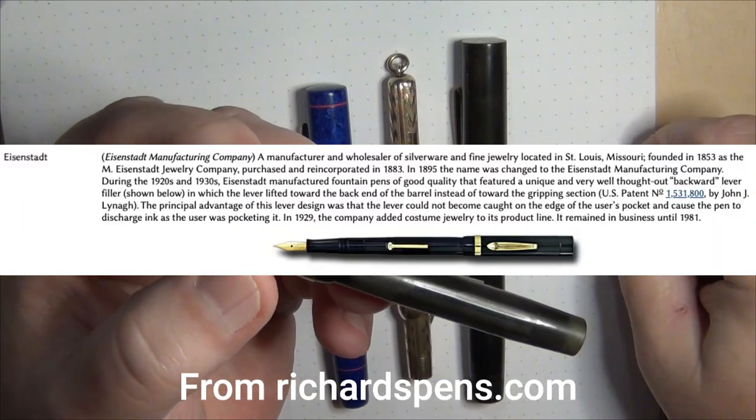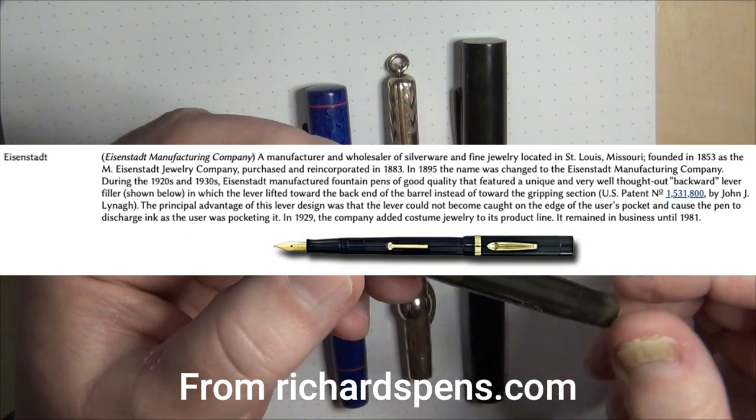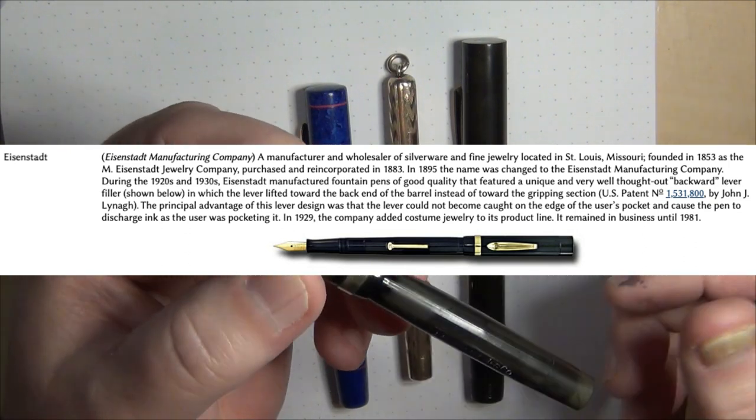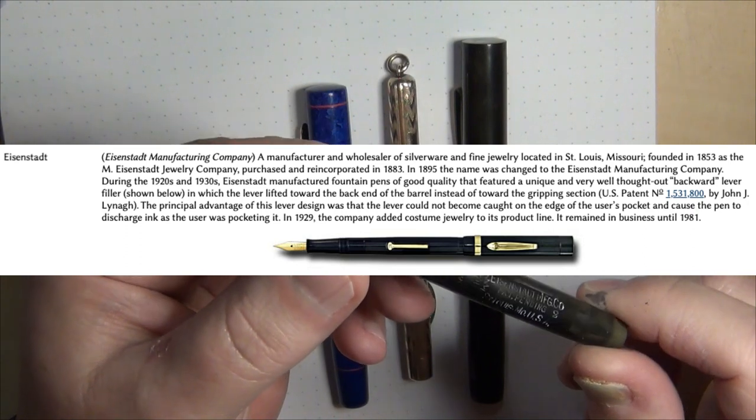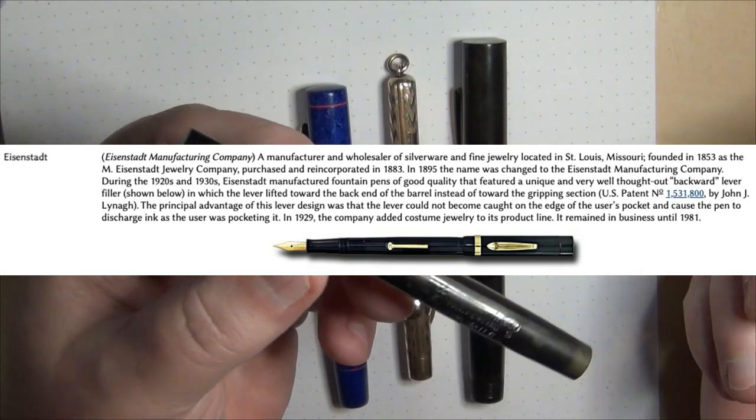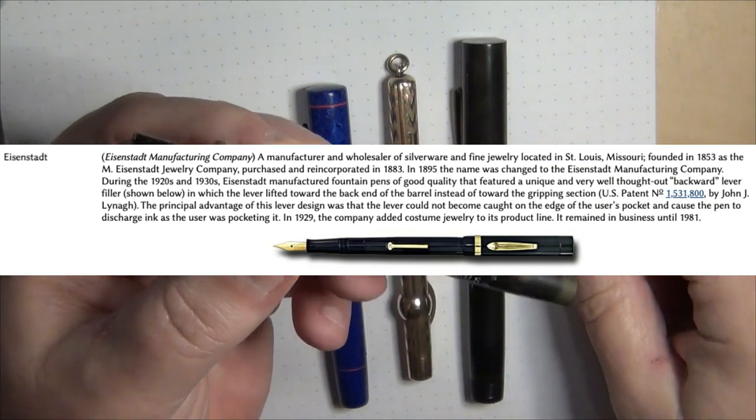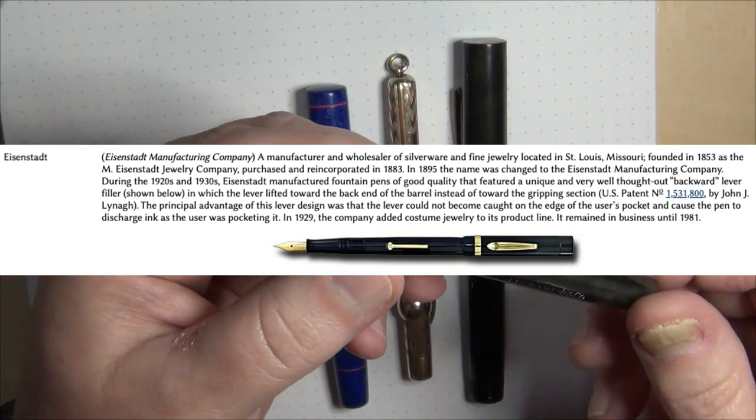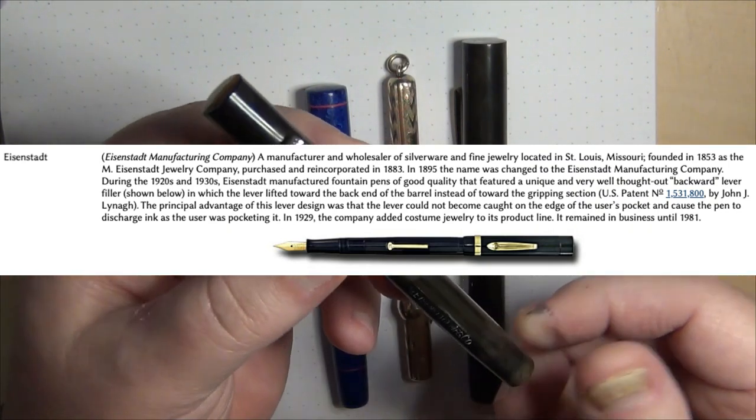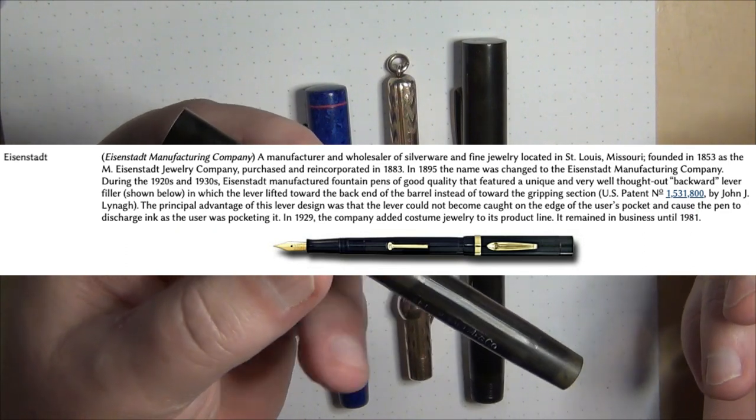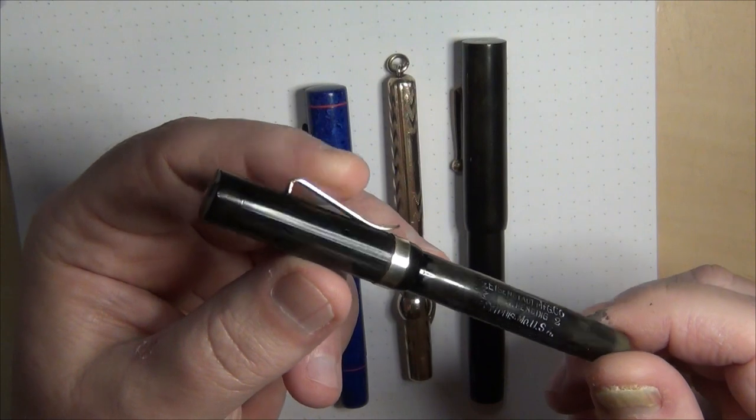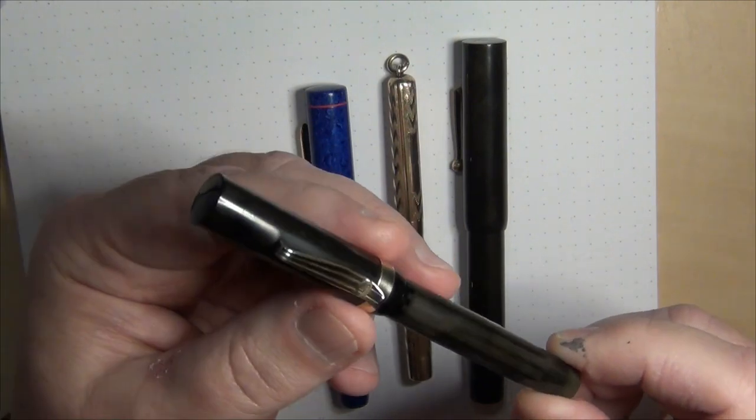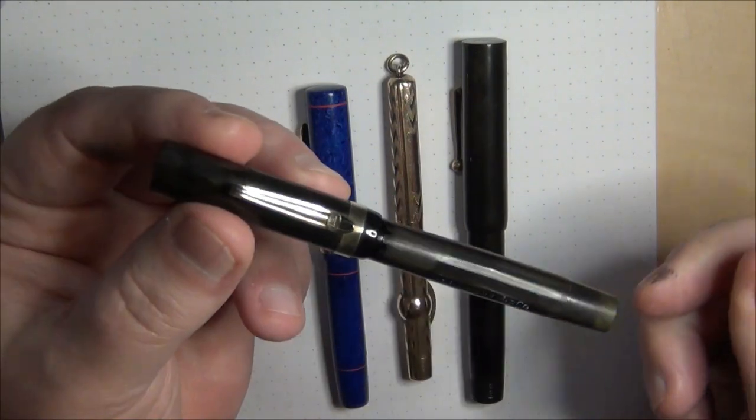Eisenstadt was a St. Louis, Missouri company. They were a jewelry company, that was their primary deal. They did jewelry from 1853 up to about 1981, so they were around for a good while. They were doing pens from the 1920s into the 30s, so they didn't do pens a whole long time in their history but they were back in the heyday.